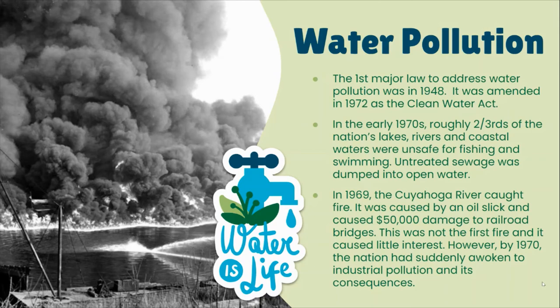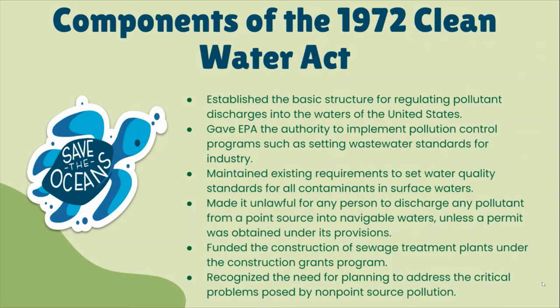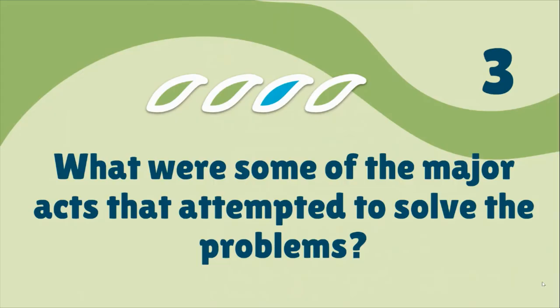Key components of the 1972 Clean Water Act include establishing a basic structure for regulating pollutant discharges into waters, giving the EPA the ability to implement pollution control programs, setting water quality standards, making it unlawful to put pollutants into navigable waters without a permit, and funding the construction of sewage treatment plants. The key takeaway is simply knowing the Clean Water Act existed and what it broadly addressed.